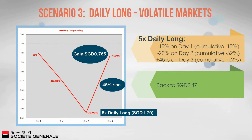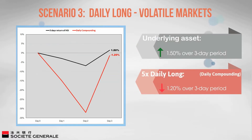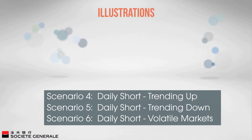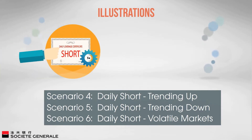As such, the 45% gain only amounted to 0.765 Singapore dollars (calculated as 1.7 Singapore dollars × 45%). The overall loss over the three days is 1.2%. Without compounding, there would have been a gain of 7.5% (calculated as 1.5% × 5). In this case the product recorded a loss even though the product and the underlying asset moved in the same direction on a daily basis.